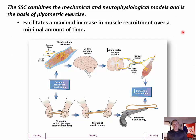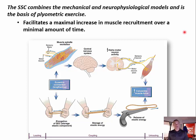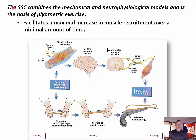While it is likely that both the mechanical and neurophysiological models contribute to the increased production of force seen during plyometric exercise, the degree to which each model contributes remains uncertain. The stretch shortening cycle, or SSC, combines both the mechanical and neurophysiological models and is the basis for plyometric exercise.